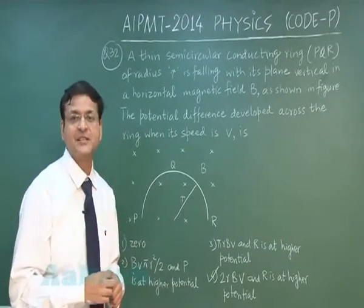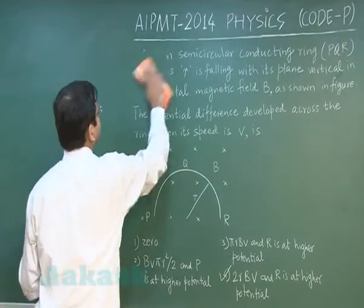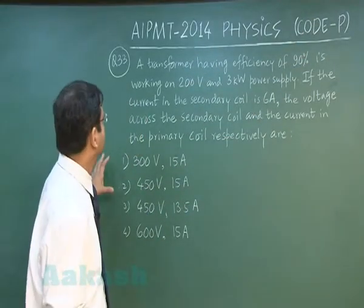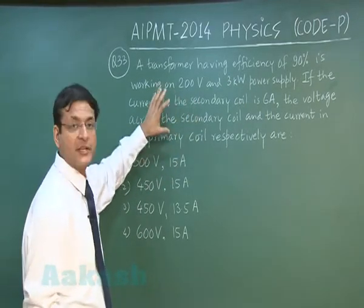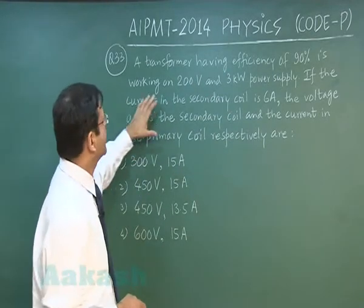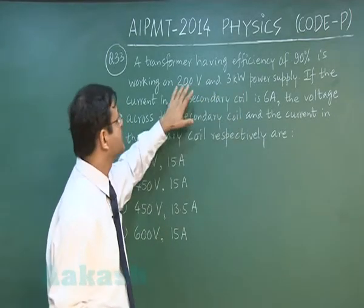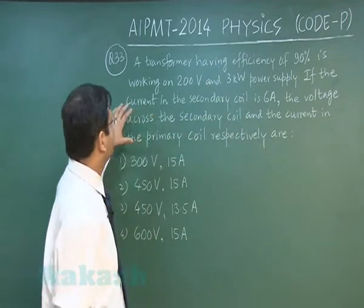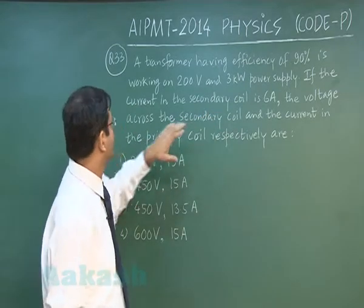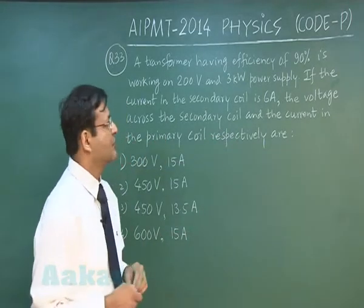Now let us discuss the next question that is question number 33. In the next question that is question 33 which is based on the expression of a transformer. A transformer having efficiency of 90 percent is working on 200 volt, that means this is a primary value given to you, and 3 kilowatt. This is primary power and this is primary voltage power supply. If the current in the secondary coil is 6 ampere, that is obvious that it is data of secondary side. The voltage across the secondary coil and the current in the primary coil respectively are. This is what you have to calculate.